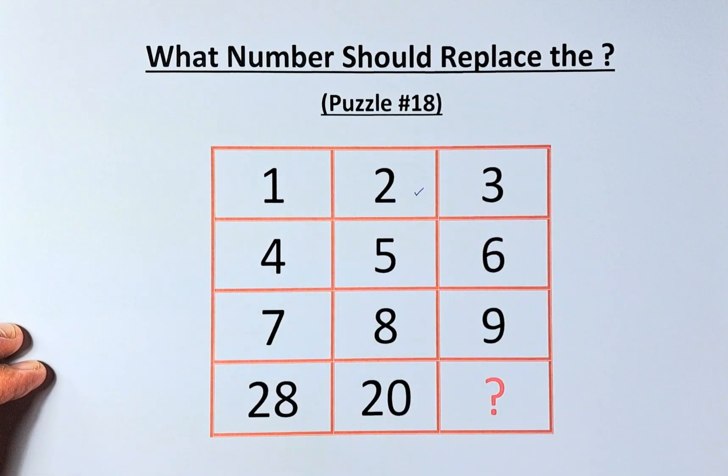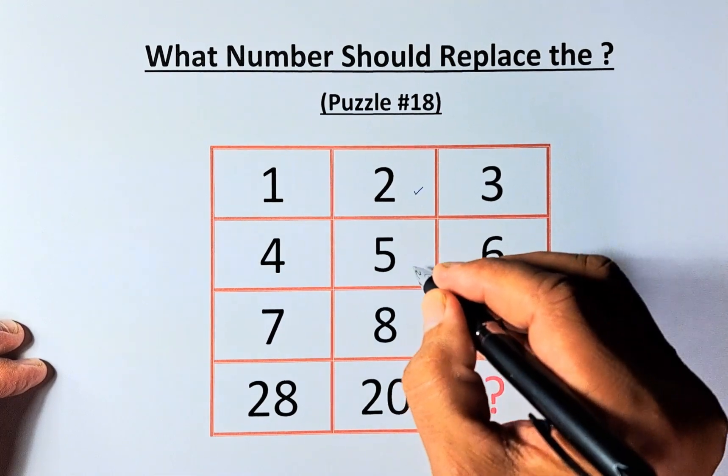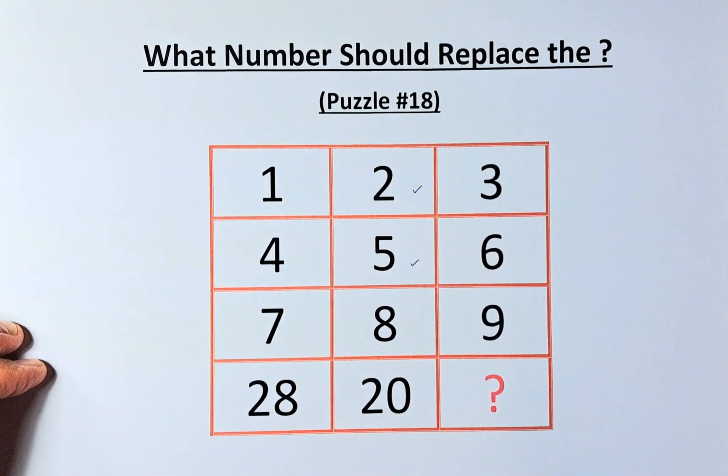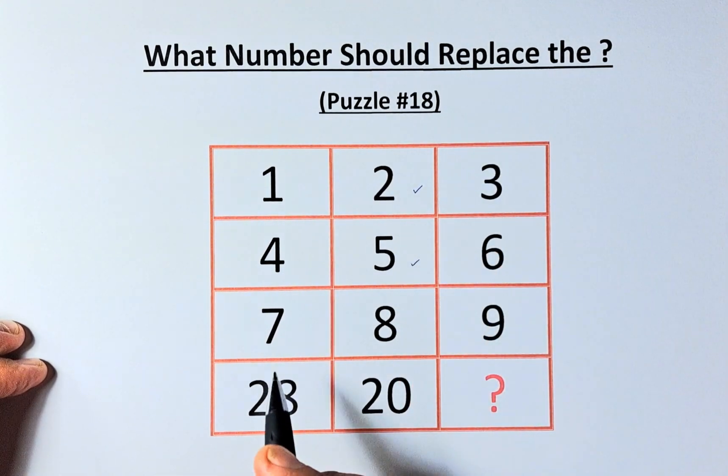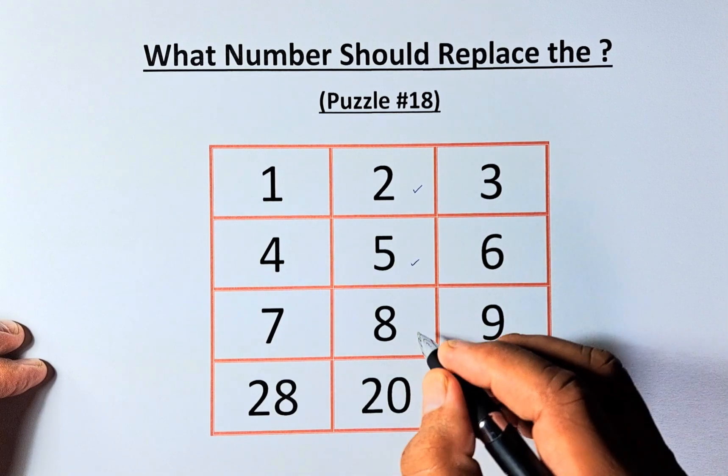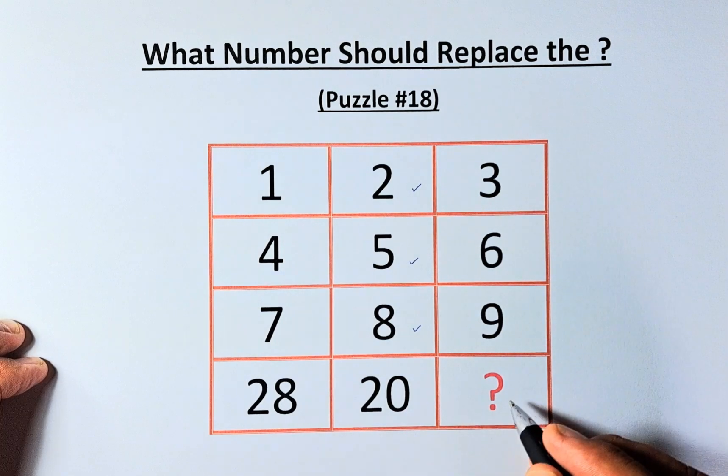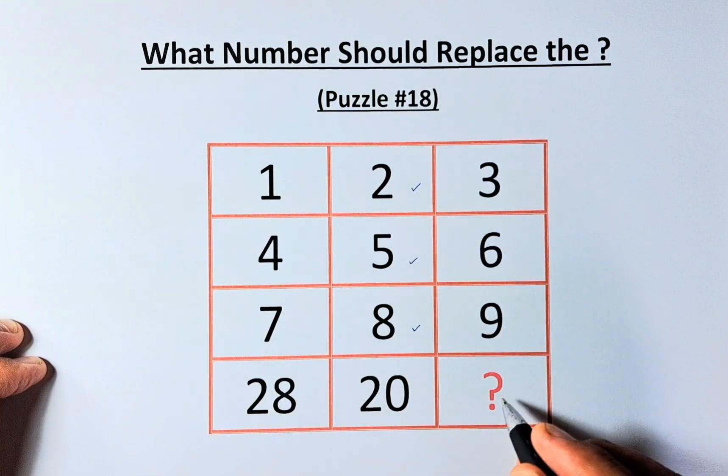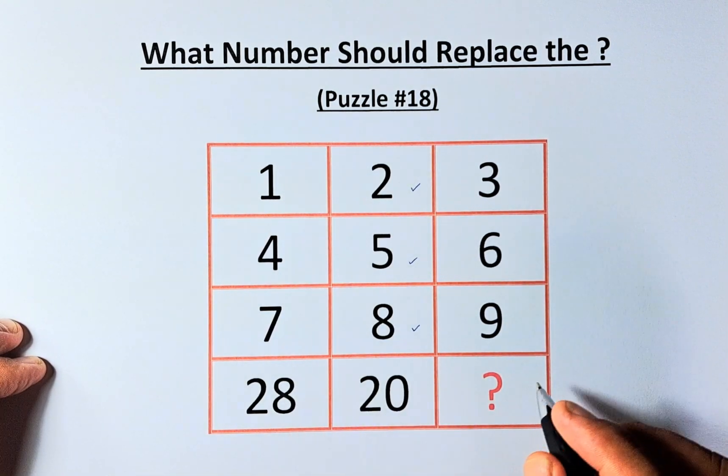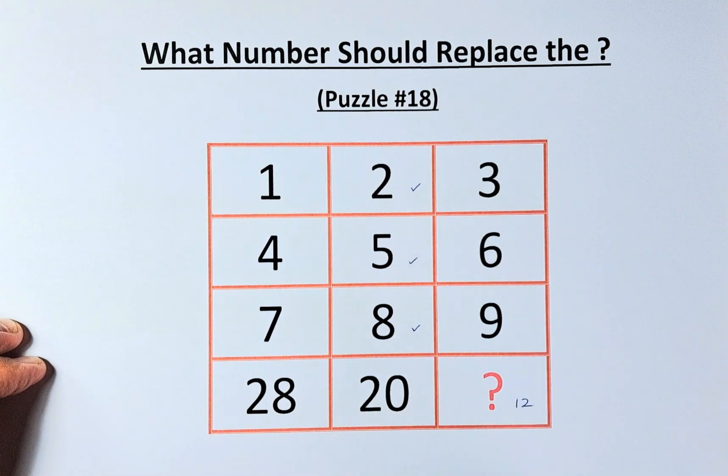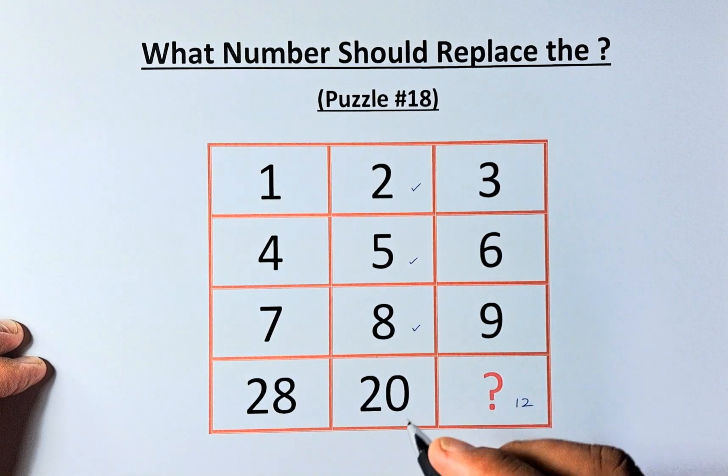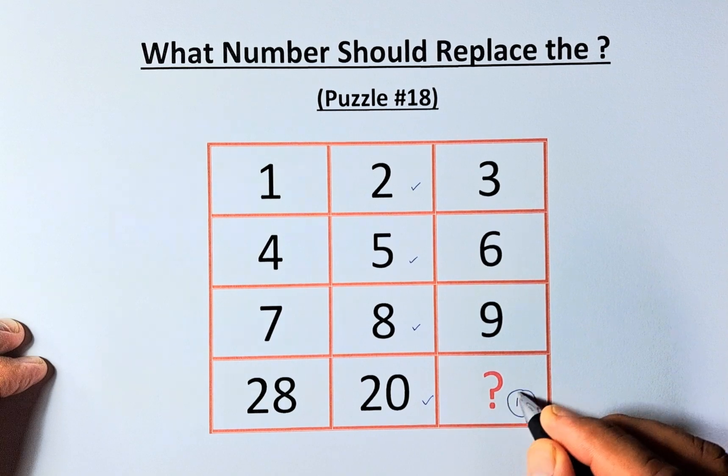Similarly, 4 plus 6 is 10, divided by 2 will give us 5. Now, 7 and 9 will give us 16, divide by 2 will give us 8. And then 28 plus a number will give us 20. 28 plus 12 will give us 40, 40 divided by 2. The first answer is 12.